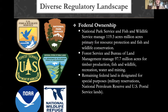Let's talk about federal ownership. The National Park Service and Fish and Wildlife Service manage about 120 million acres across the state of Alaska. Their main purpose is resource protection and fish and wildlife conservation. Each individual park and wilderness area has its own management plan, but in general U.S. Fish and Wildlife Service and National Park Service focus more on protection and conservation.